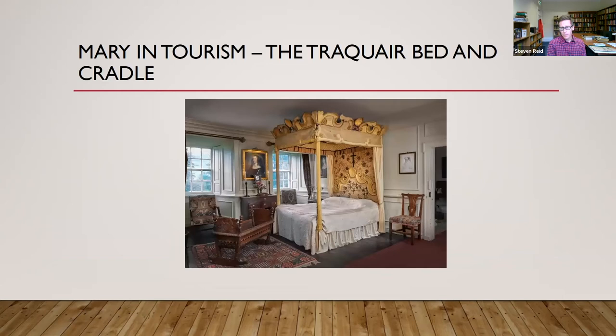We also find Mary in tourism. The bed at Traquair and the cradle are curated and interpreted as beds that Mary and her son would have slept in. We know from research that there's no way James could have stayed at Traquair as an infant, so the cradle is spurious. And the bed itself is not actually one that Mary slept in — it's from a noble family down the road, indicative of the type of bed she would have used. It's a good example of how objects can become enmeshed in Mary's story for the purpose of heritage and tourism.